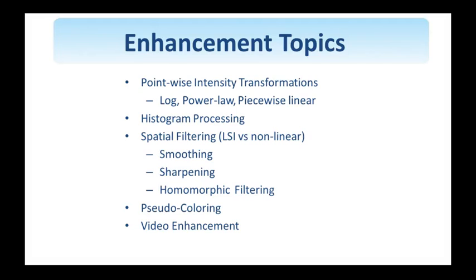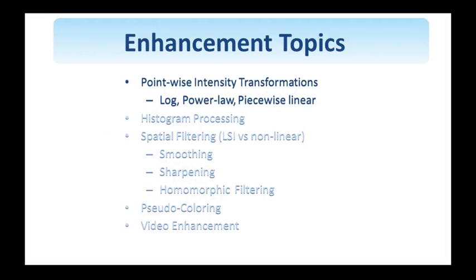The image enhancement topics we will be covering in this class are: point-wise intensity transformations defined ahead of time to suit our purposes; point-wise intensity transformations that result from objectives imposed on the histogram of the image; spatial filtering, both linear and spatially invariant and non-linear, including examples for noise smoothing, sharpening, and homomorphic filtering; applications of pseudo-colouring; and some examples on video enhancement. Let us proceed now with the first topic on the list.